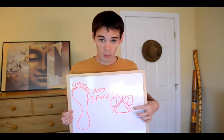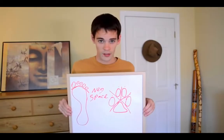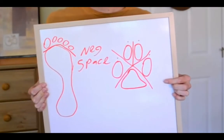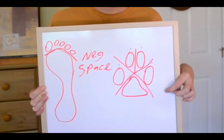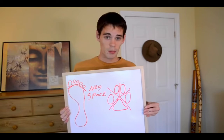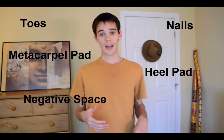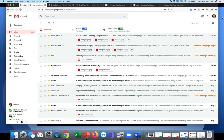The final track component is negative space — the gap created between the metacarpal pad and the toes. It's actually the absence of an impression, and different animals produce different shapes with their negative space. Imagine a line flowing between the metacarpal pad and the toes: some negative space will be an X shape, some a star shape, and some a sideways C shape. So your complete track topography is: toes, nails, metacarpal pad, heel pad, and negative space. Knowing these components will shave years off your learning journey.